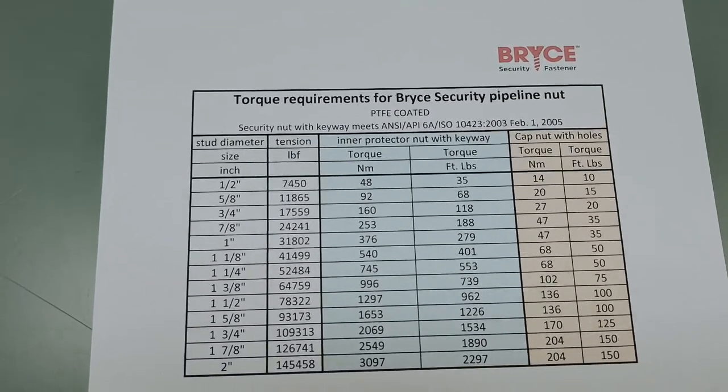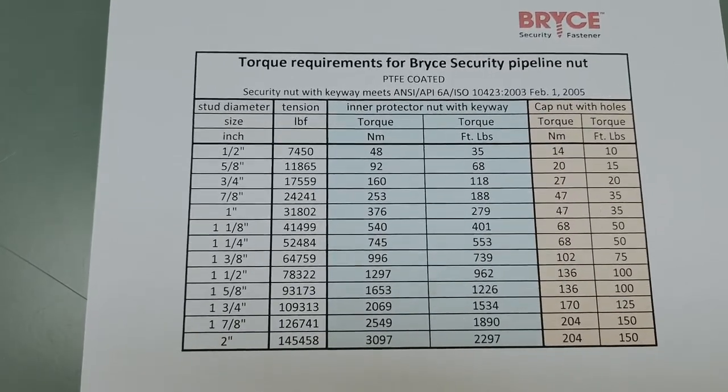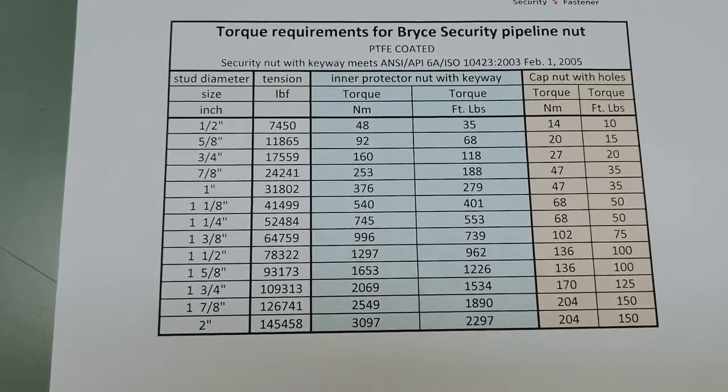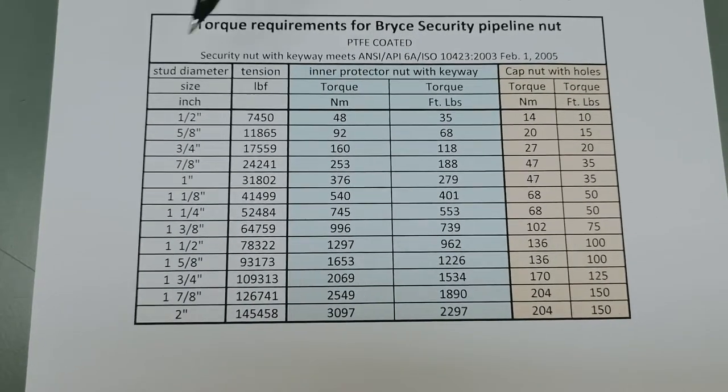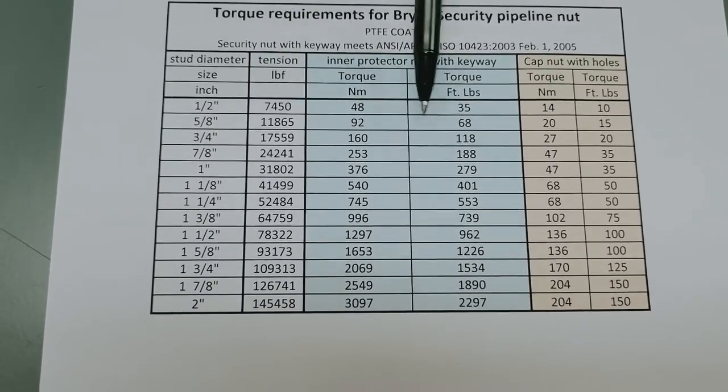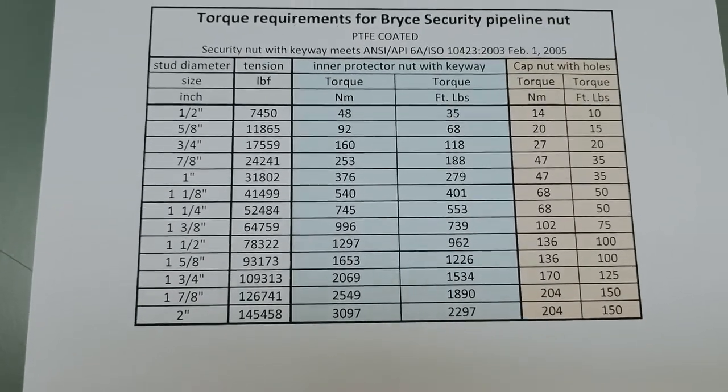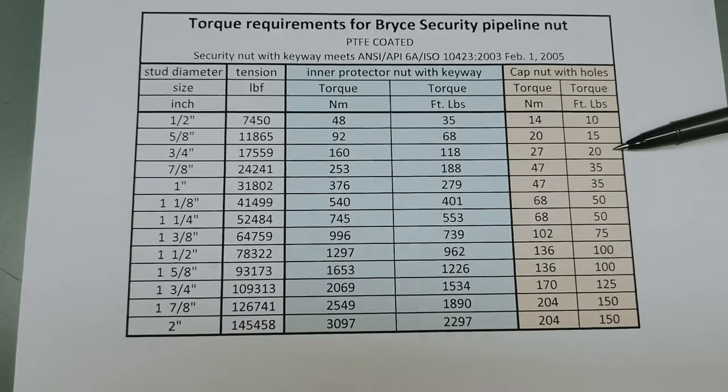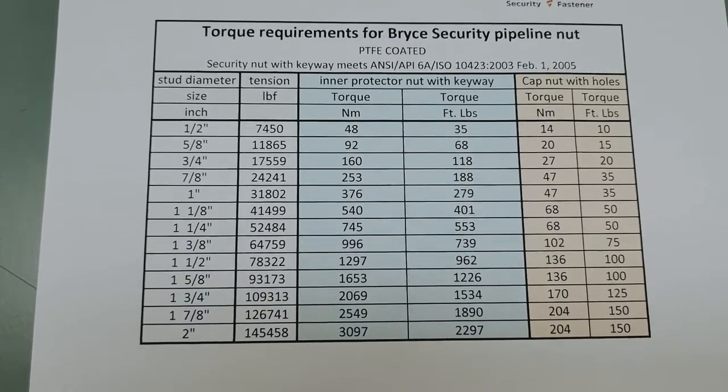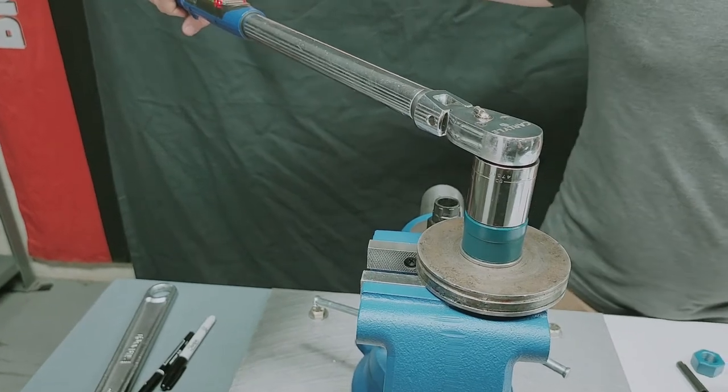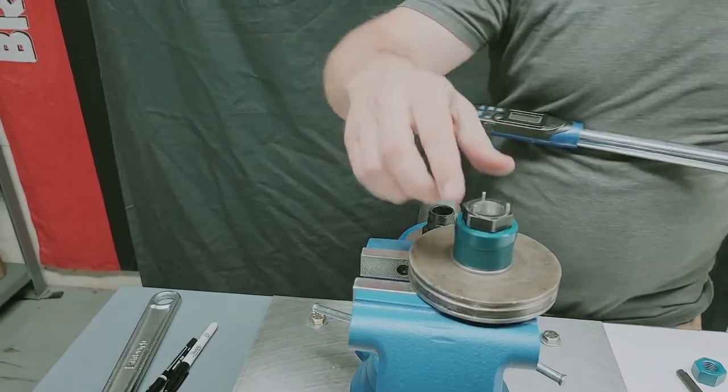Now you can see we actually have torque requirements for the Bryce security pipeline nut for PTFE applications, written in both newton meters and foot-pounds, and each one has a different torque. In this particular case, three-quarter was 118, which you saw we did, and then the security cap has got 20 foot-pounds or 27 newton meters, which we are going to do right now. Not much torque there, but it really does its job. It's all that's needed.